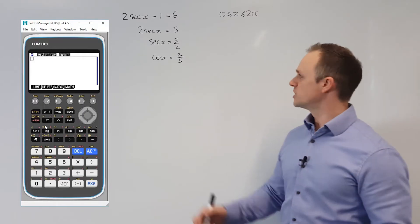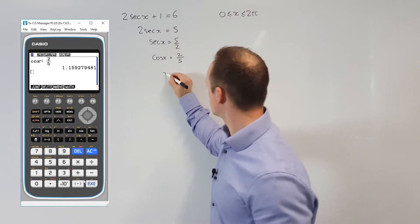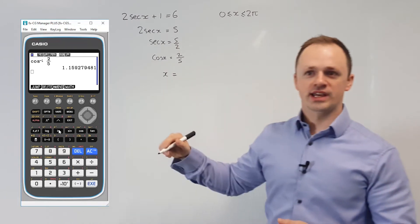From here, we just need to put inverse cos of 2 fifths into our calculator to get the principal solution. If we do that, we're going to get 1.16.